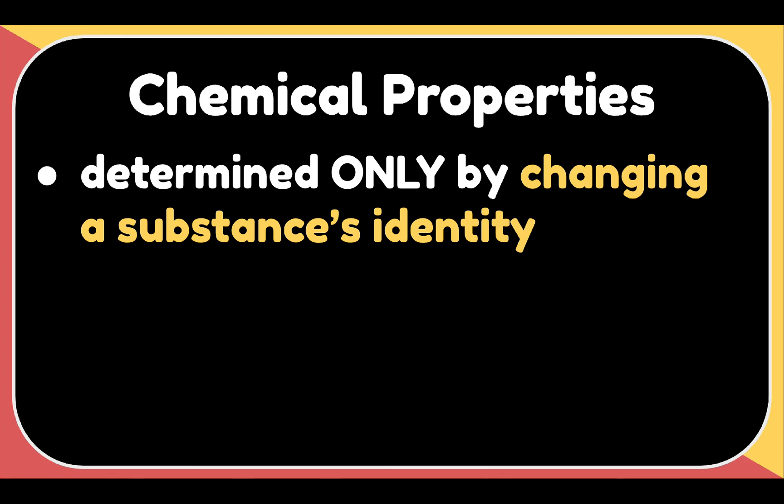Now let's go to chemical properties. A chemical property is any characteristic that can be determined only by changing a substance identity, possibly through a chemical reaction. Chemical properties include reactivity with other chemicals. It is the likelihood of a substance to undergo a chemical reaction.